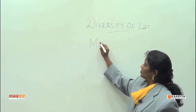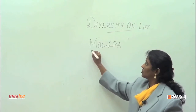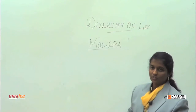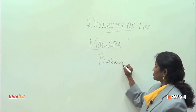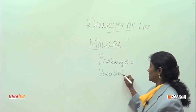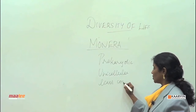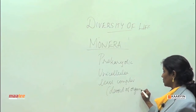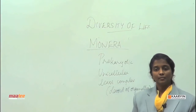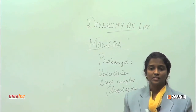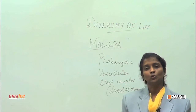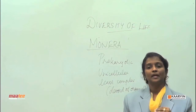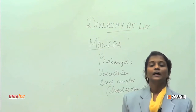Let me talk about Monera again. Monerans are the pioneers of this earth — they colonized the earth first during the earliest stages of evolution. Monerans are prokaryotic in nature, unicellular, and the least complex organisms. We call them least complex because they are devoid of specialized organelles. Monera can be further divided into Archaebacteria and Eubacteria, which we will see later in Carl Woese's Six Kingdom Concept.